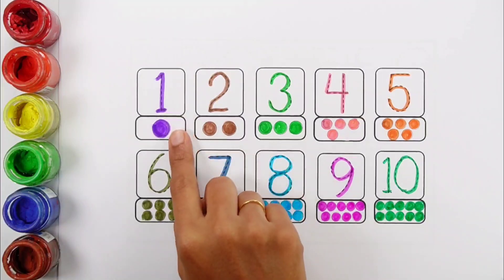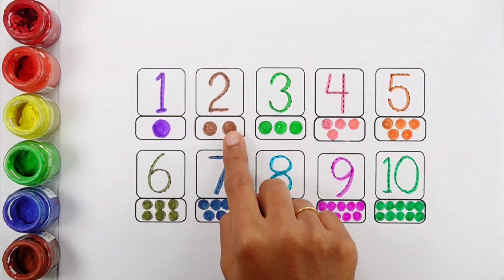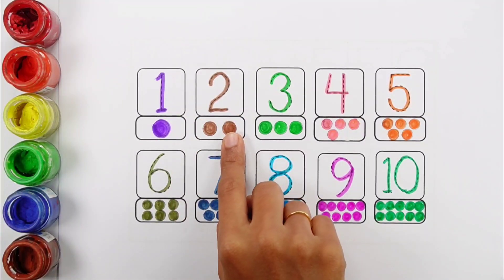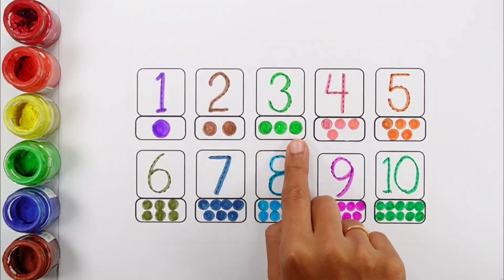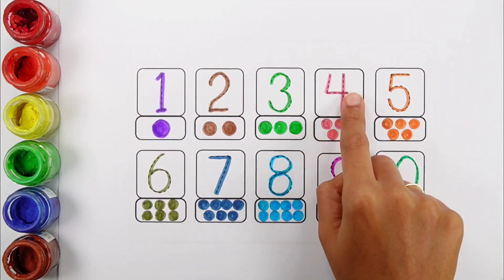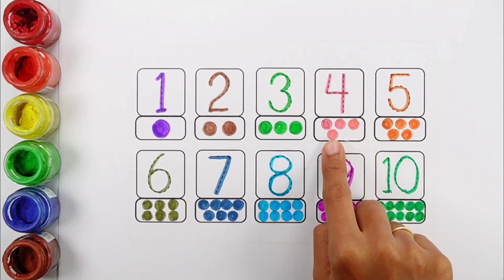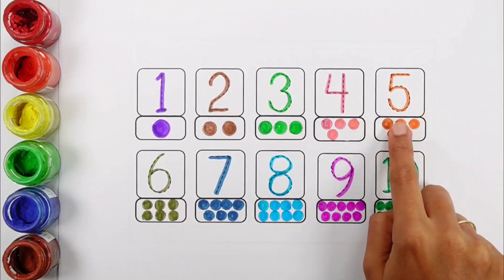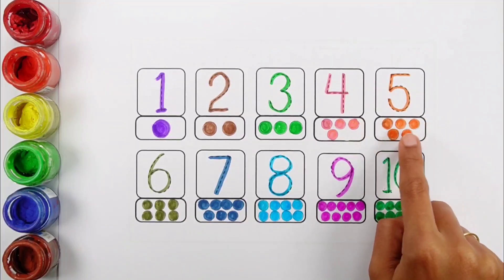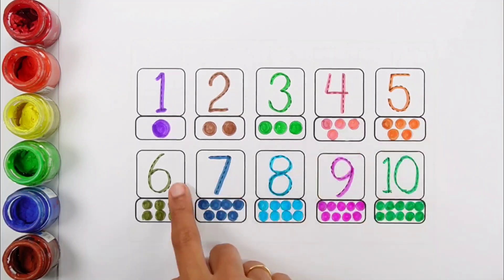One — one circle. Two — one, two. Two circles. Three — one, two, three. Three circles. Four — one, two, three, four. Four circles. Five — one, two, three, four, five. Five circles.